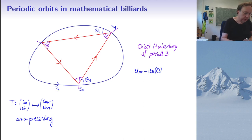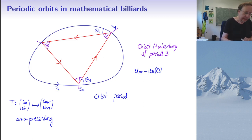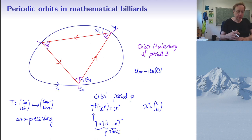An orbit of period p is a sequence of couples (s, u), while the trajectory is the broken line in physical space. An orbit of period p is a sequence starting at some x* such that T^p(x*) = x*, so x* is a fixed point of T composed with itself p times.